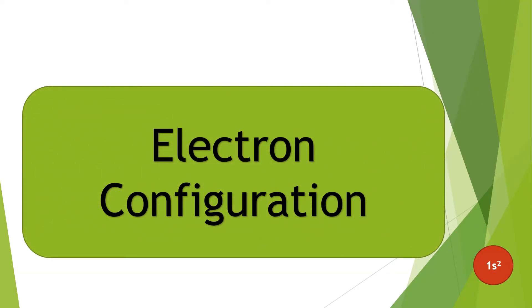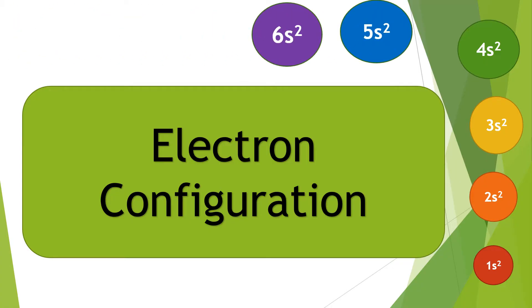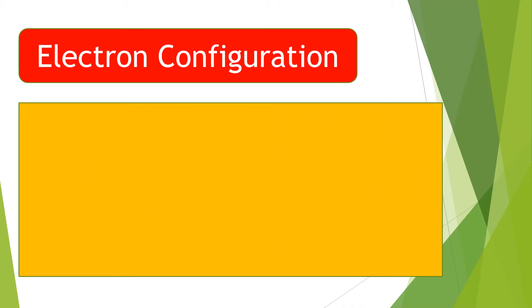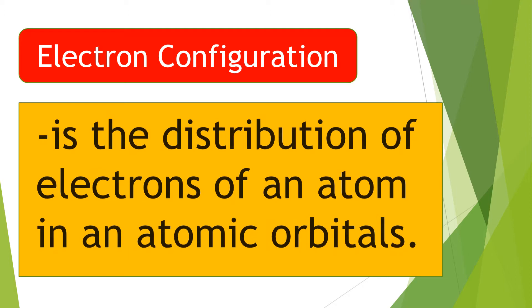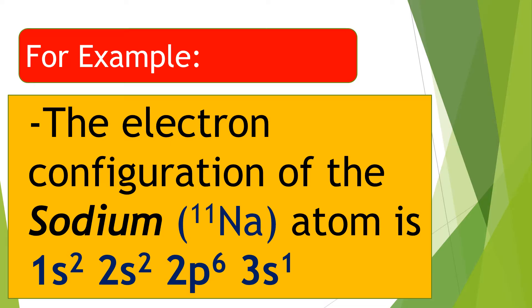Electron Configuration. Electron configuration is the distribution of electrons of an atom in atomic orbitals. For example, the electron configuration of the sodium (Na) atom is: 1s2, 2s2, 2p6, 3s1.